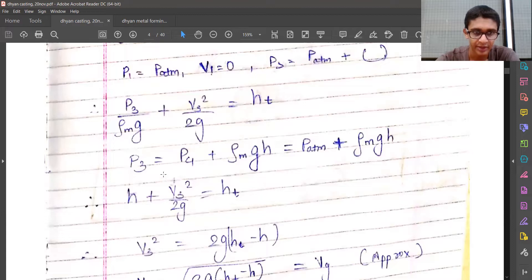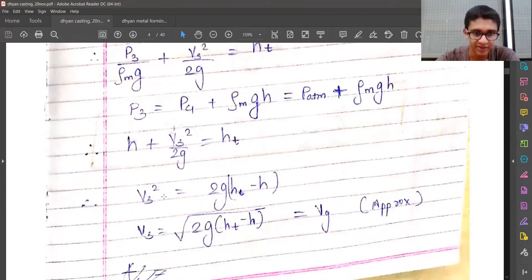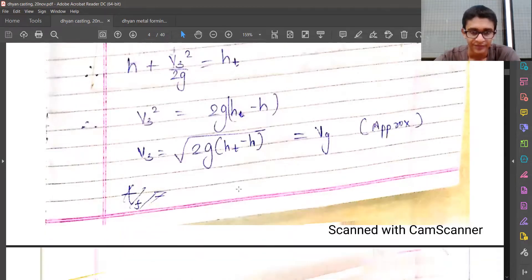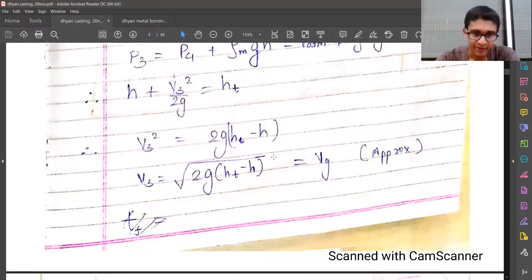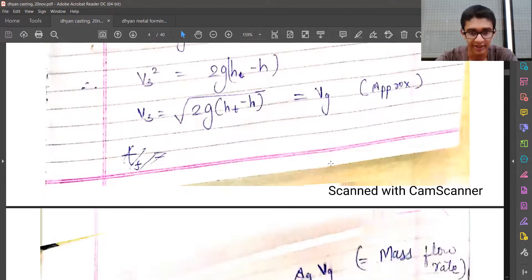The instantaneous height h plus v3 squared over 2g equals ht. Substituting, we get v3 squared equals 2g times (ht minus h), where h is the instantaneous height and ht is the total height of the mold. That is approximately the velocity at which the metal will flow at the gate.